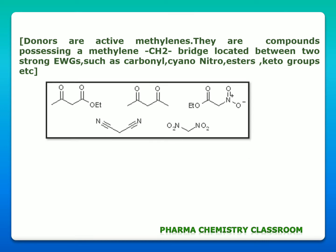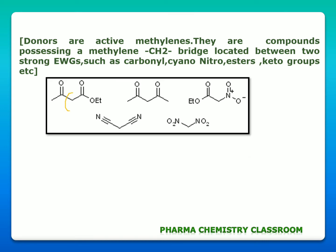Here you can see some examples. This CH2 group — a methylene bridge — is located in between two carbonyl compounds or two electron withdrawing groups. This is a methylene group located in between two cyano groups, and here a nitro group. So Michael donors are compounds containing active methylene groups located in between two strong electron withdrawing groups, and this group of compounds must satisfy this criteria.